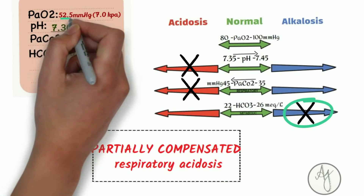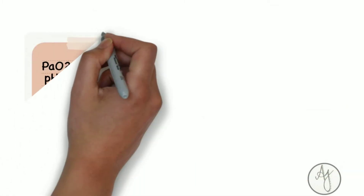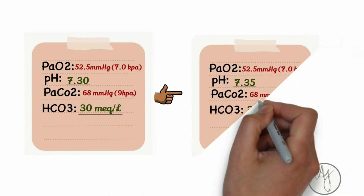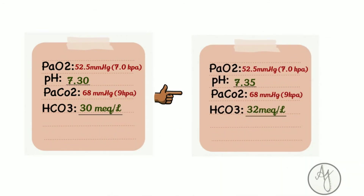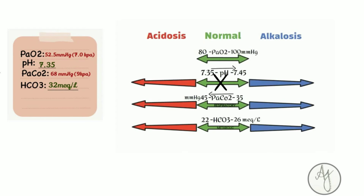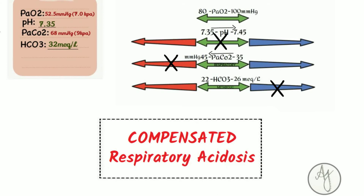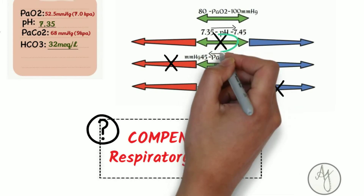Now, keeping the same example, if we change the values so the pH is 7.35 and bicarb is slightly more increased to 32 mEq/L — here the pH is in the normal range, but carbon dioxide is increased and so is the bicarbonate. This is called compensated respiratory acidosis — it's successfully compensated because the pH has returned to the normal range at 7.35.